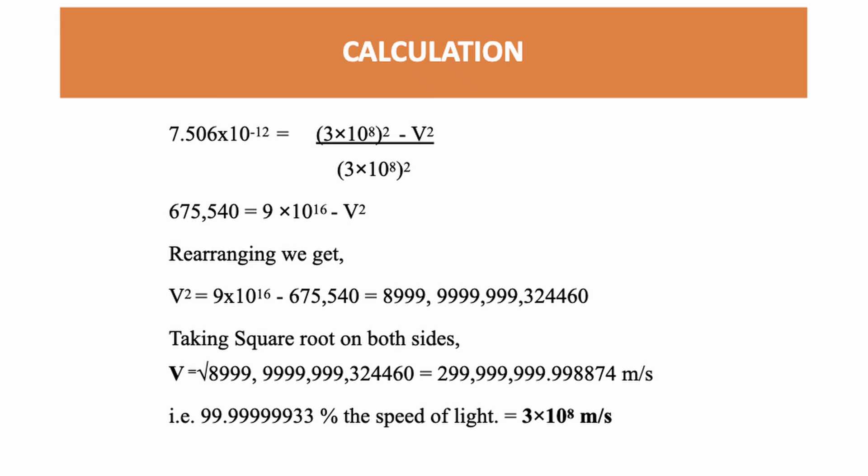we get 675,540 = 9×10¹⁶ - V². Rearranging the equation, we get V² = 9×10¹⁶ - 675,540. Therefore, V² = 89,999,999,999,324,460. Taking the square root,